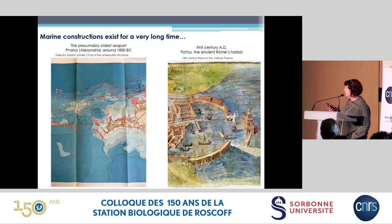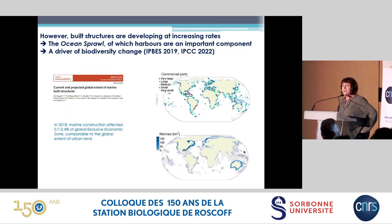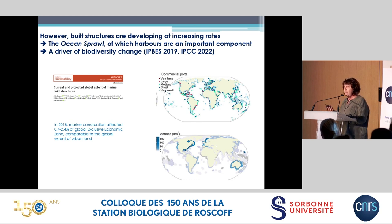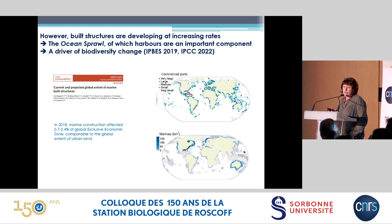A few words about the context: marine construction has been existing for a very long time. You have here two illustrations of two famous seaports — the Alexandria port and, on the right, Portus, the ancient harbor of Rome. In the last centuries and decades, built structures have been developing at increasing rates. This proliferation of human-built infrastructure at sea has been named the 'ocean sprawl,' originally by Carlos Duarte. In this proliferation, harbors, ports, and marinas are major contributors, representing roughly 25 percent of all marine construction.